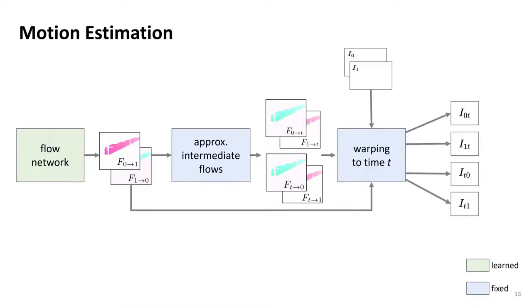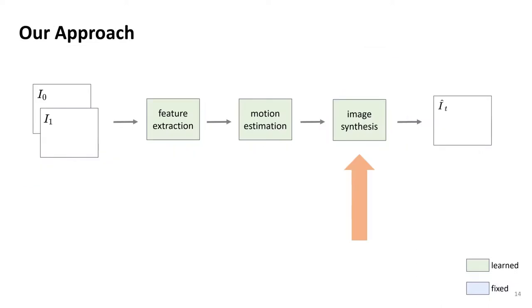Given our four intermediate flow fields, we can warp the input frames to the intermediate time step t to get four different candidates of the intermediate image. However, these intermediate images often suffer from different artifacts. Next, we discuss how we can obtain the final interpolated image.